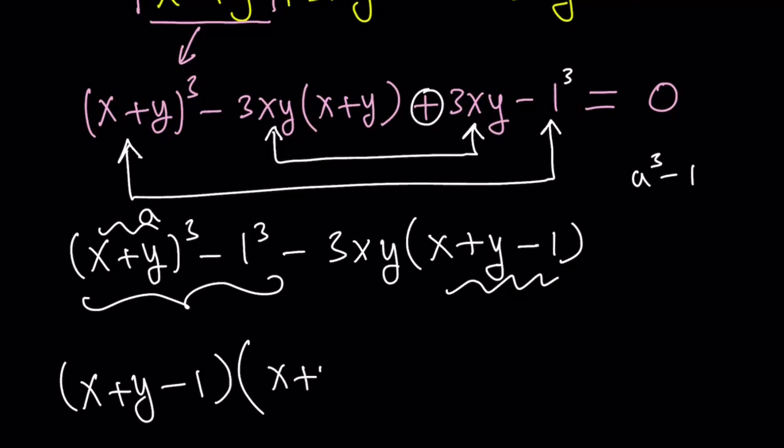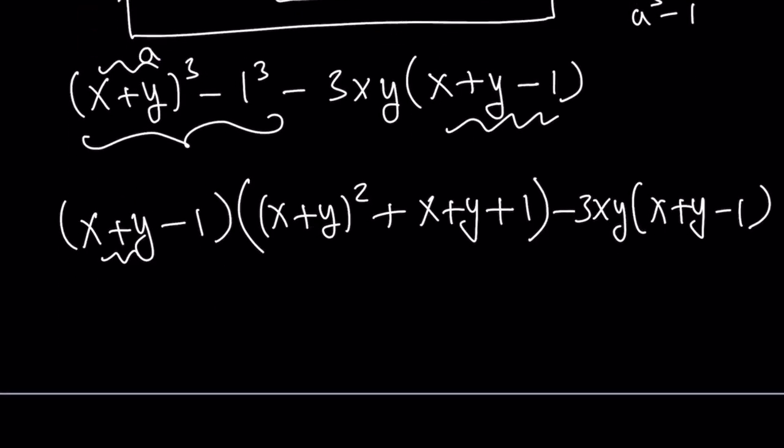Make sense? So, the second factor is going to be a squared plus ab. By the way, x plus y is a here. x plus y plus b cubed, which is 1. And then minus 3xy times x plus y minus 1. Now, after doing the grouping, we get another common factor. That's the idea behind factoring by grouping.